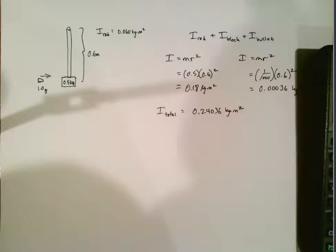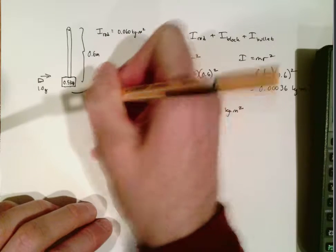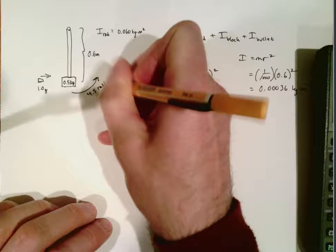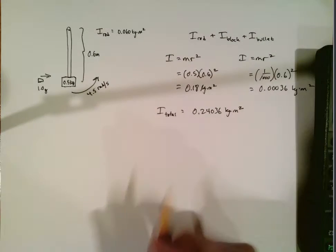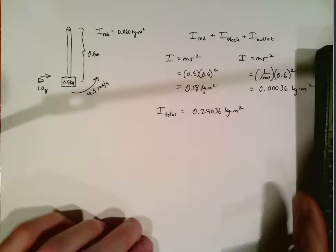Let's take a look at part B where they tell us if the angular speed of the system just after the bullet's impact is 4.5 radians per second. So after the impact it's going to be going 4.5 radians per second in that direction. They want us to find the speed of the bullet just before the impact. And as I said, anytime there's a collision you should think law of conservation of momentum.